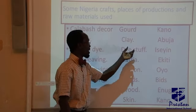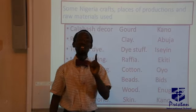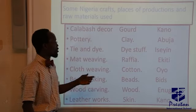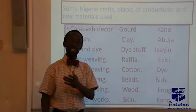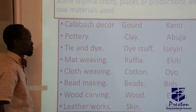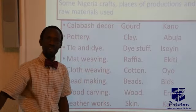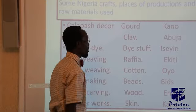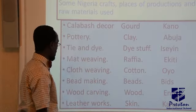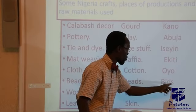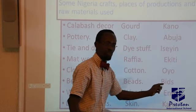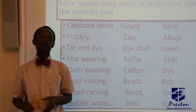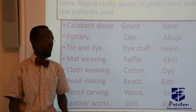Tie-and-die — the material is dyed cloth and it is found in Oshogbo, in the Yoruba region of Nigeria. Mat weaving — the raw material is raffia and it is common in the Kogi states of Nigeria. Cloth weaving is found in your state as well. Bead making is also common in Bida. Wood carving is common in Enugu state in the eastern part of the country. Leather work is more common in Kano.